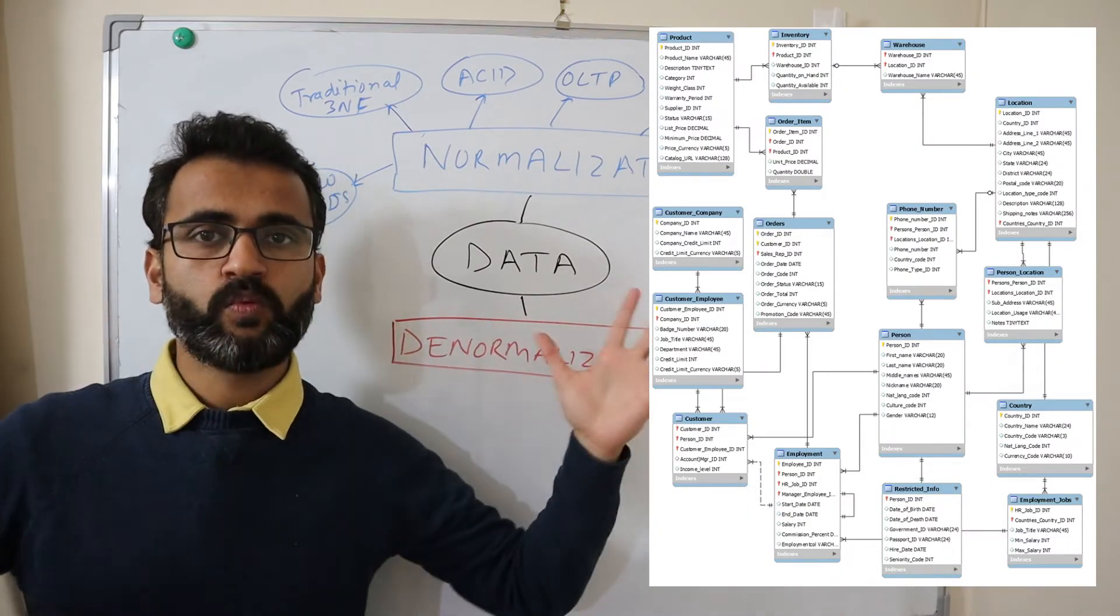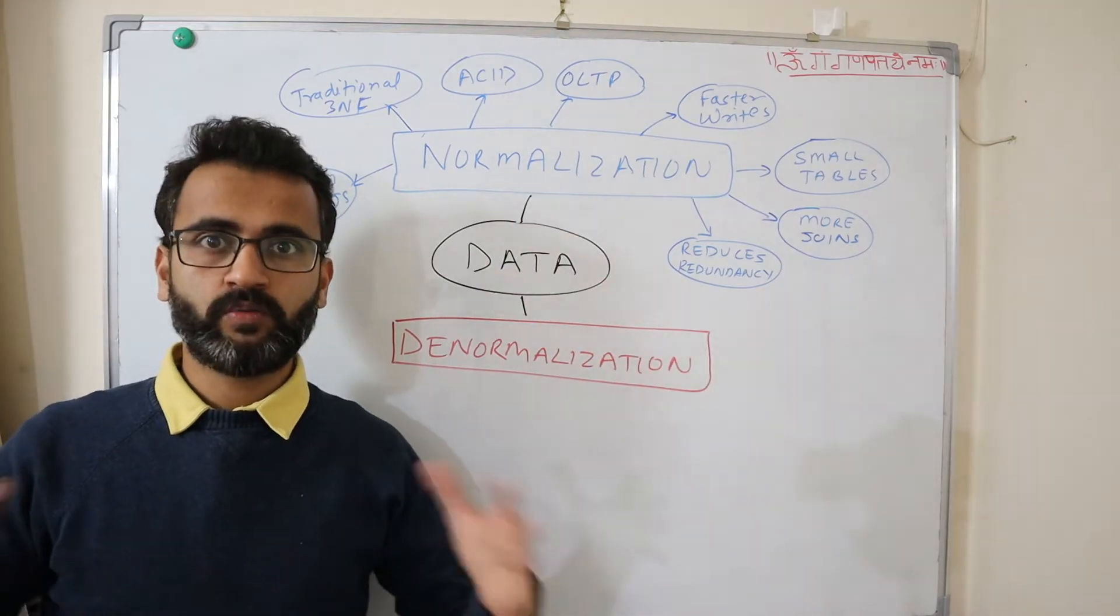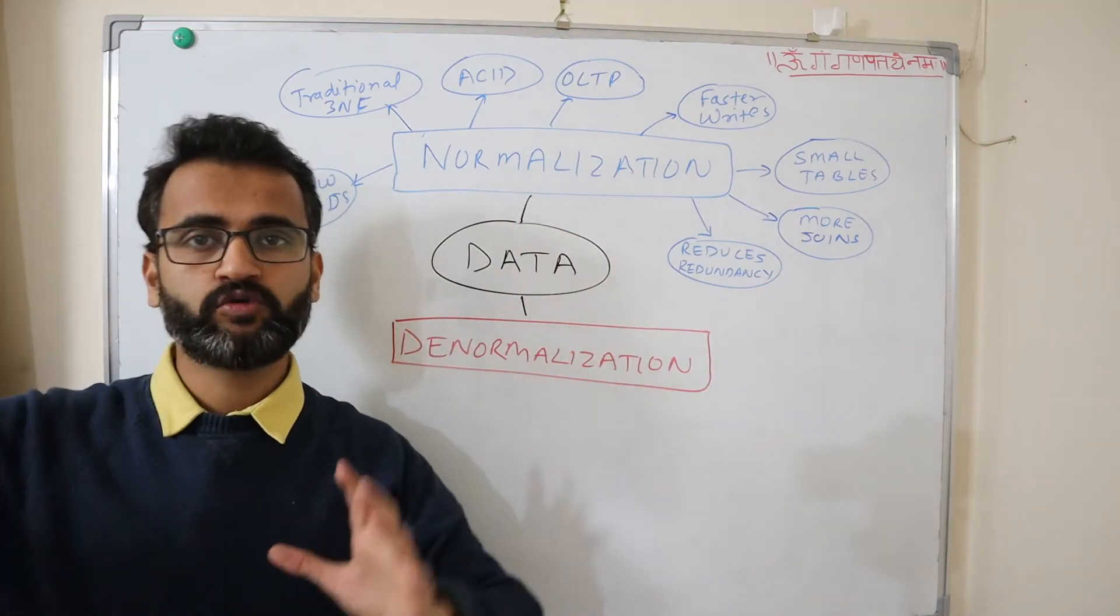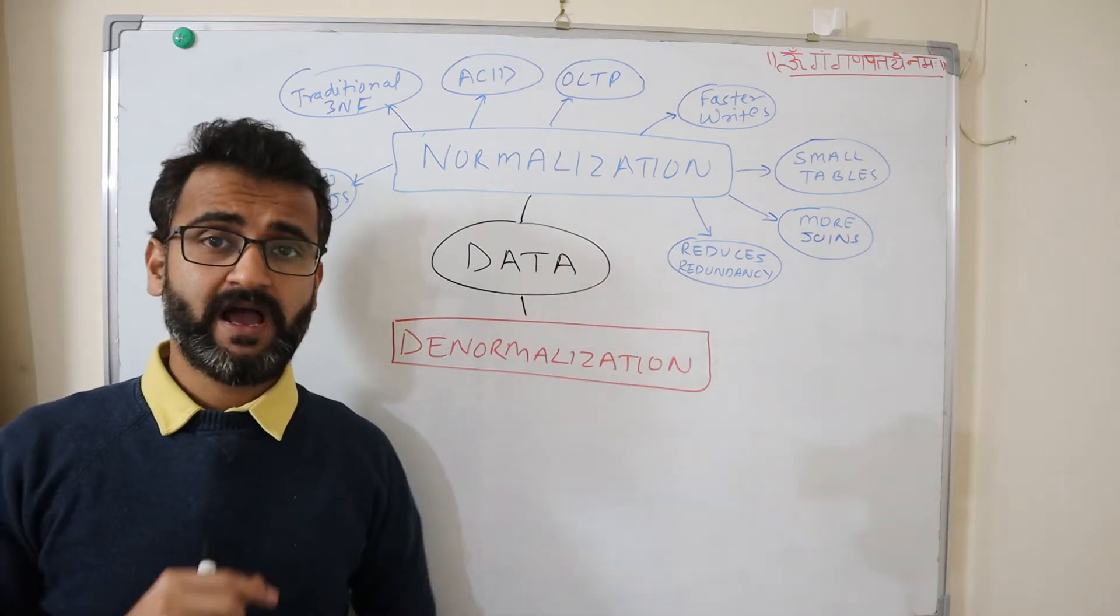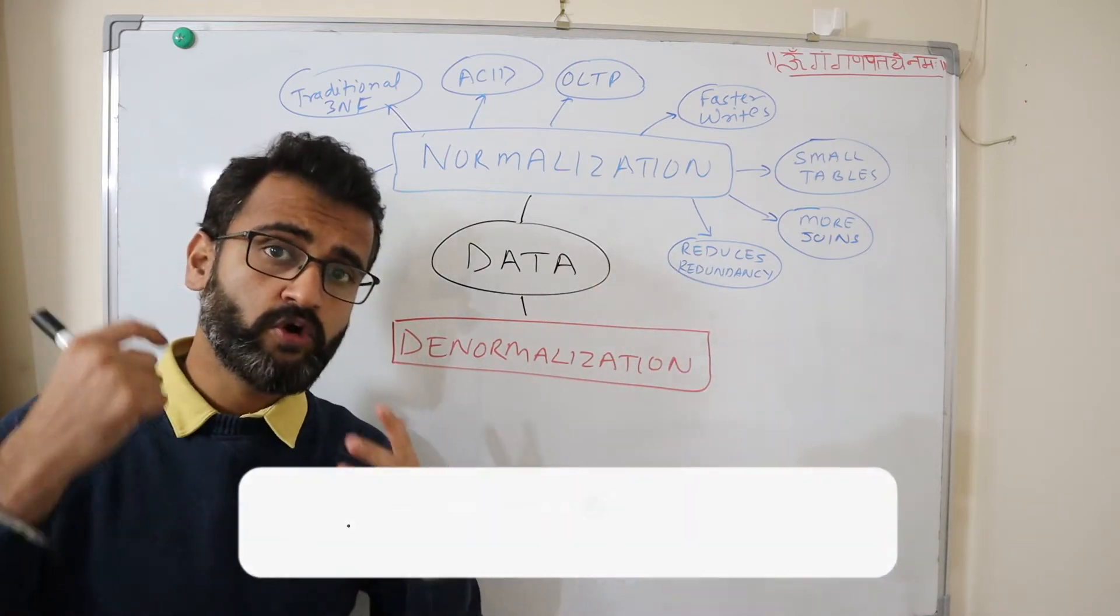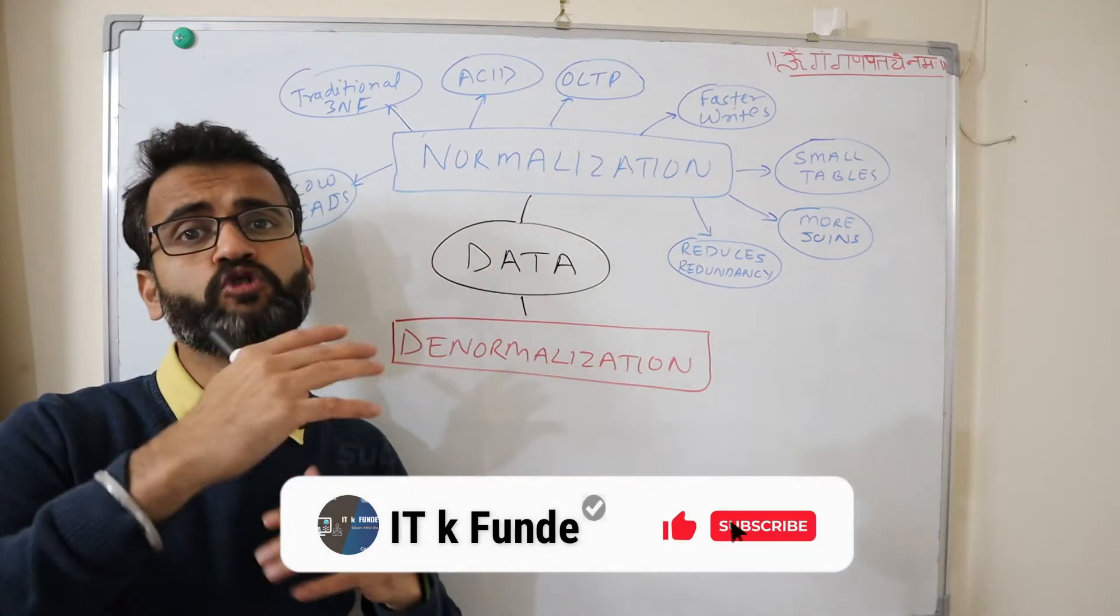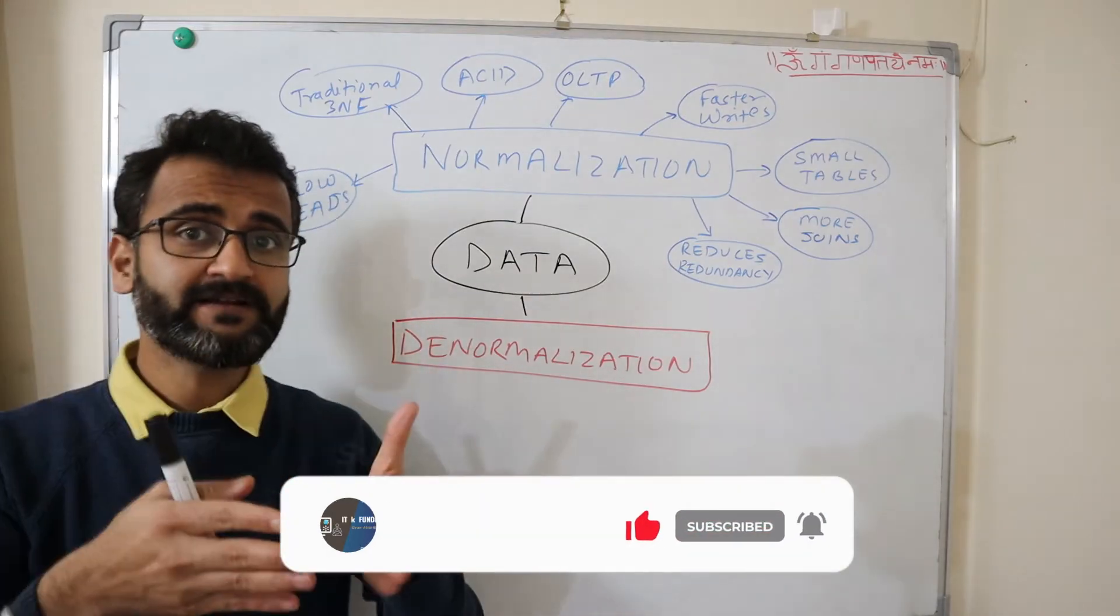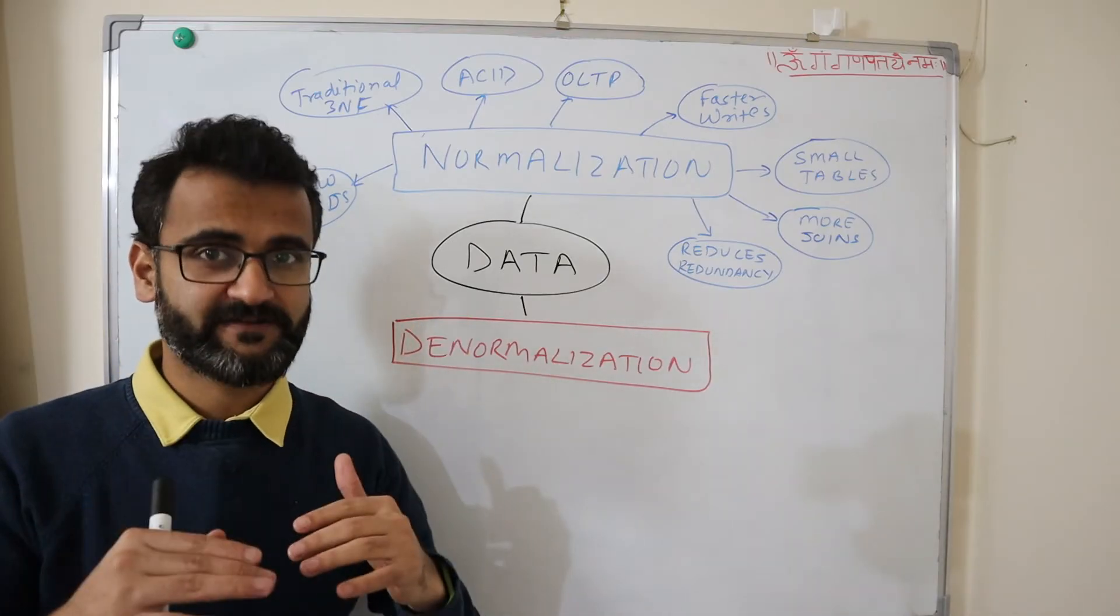You will have a very wide, very complex looking data model wherein you will have one table joining to multiple several tables. Whenever you want to fetch the data, you have to join it across all the tables. That's why when you are writing the data into a normalized database, it's very fast.